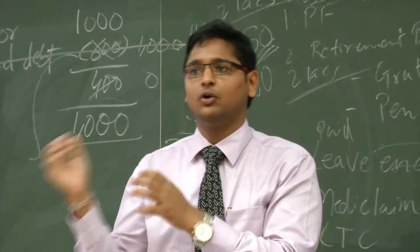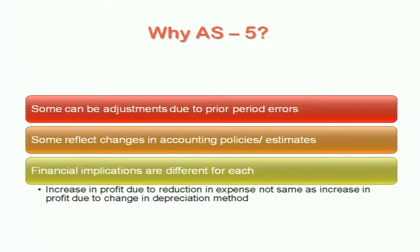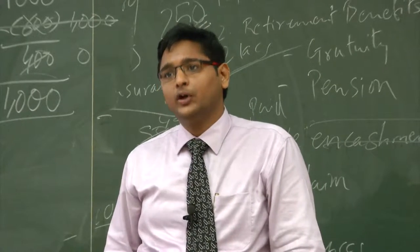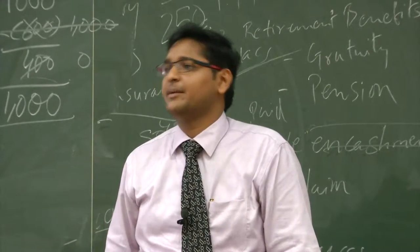AS5 is about how to disclose events, not how to account for them. Some items can be adjustments due to prior period items, which also need to be disclosed separately. Some reflect changes in accounting policies or estimates — because you have changed the accounting policy, it is affecting your income statement. You should disclose in your financial statements, whether in notes or elsewhere, the impact of the change in accounting policy or estimate and how it has adjusted your profit and loss or income and expenditure account. Financial implications are different for each — an increase in profit due to reduction in expenditure is not the same as an increase in profit due to change in depreciation method. Hence it is important to disclose these financial implications separately.